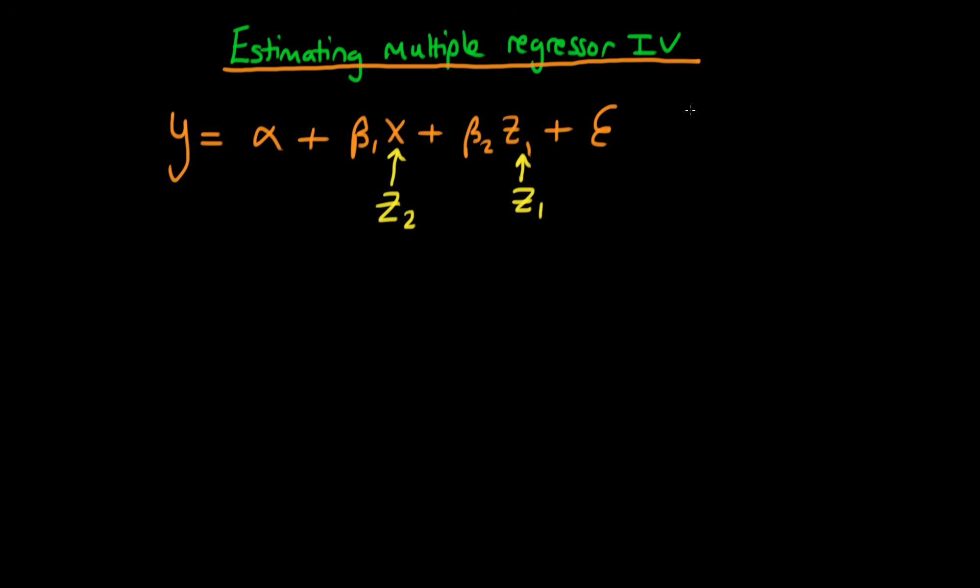Because remember in our bivariate model we derived an explicit form for beta hat IV which was equal to the sample covariance of yi with z, so that's yi minus y bar times zi, divided through by the sample covariance of xi with z, so that's xi minus x bar times zi. And both of these obviously are summing from i equals 1 to n.